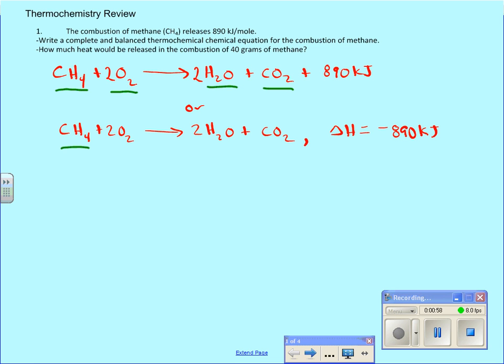So these are both correct and acceptable thermochemical equations. One of them has it written in the fact that it's going to give off 890 kilojoules as a product. The other one just has it written as a side that the change in enthalpy is negative 890, excuse me, kilojoules of energy. The fact that this is written on the product side and the fact that this is negative tells us that this is an exothermic reaction.